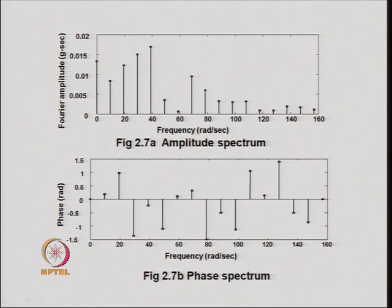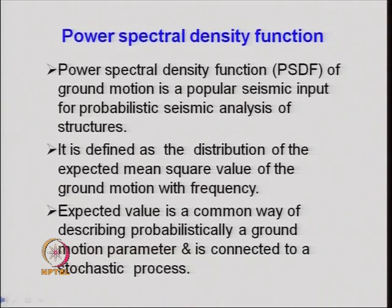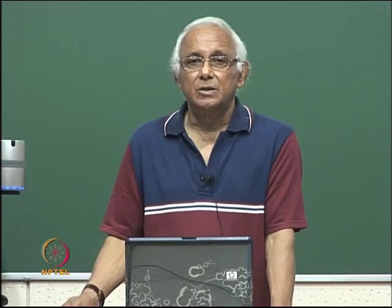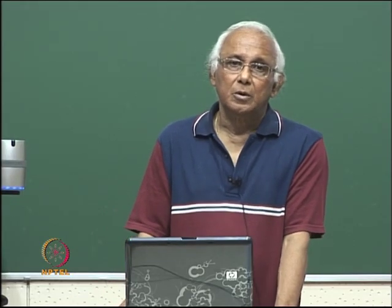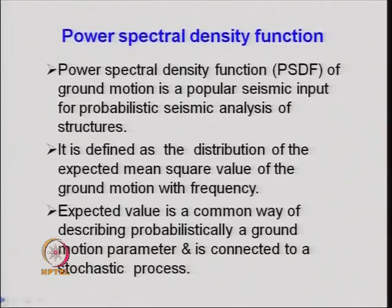The Fourier amplitude spectrum is drawn for the first half — the left side of the Nyquist point — and the phase spectrum shows φ plotted against frequency.